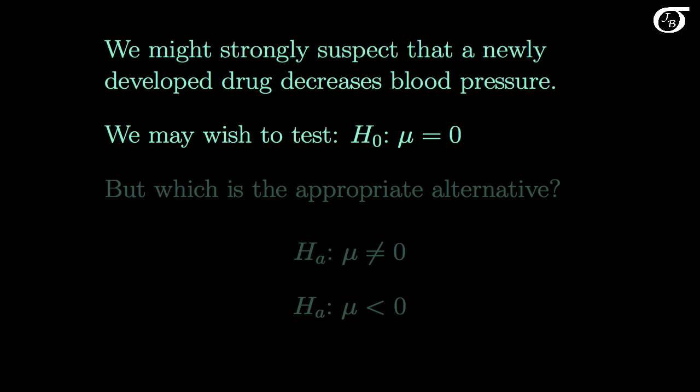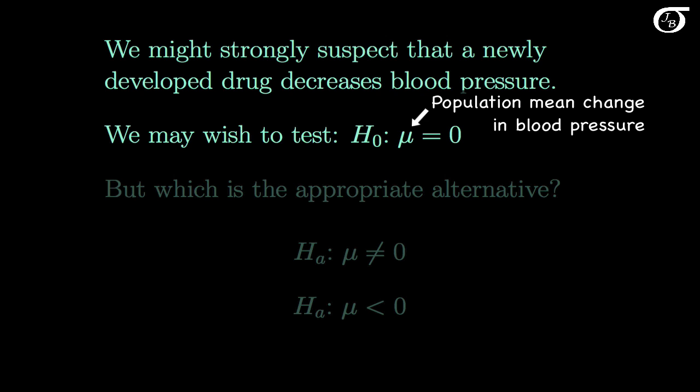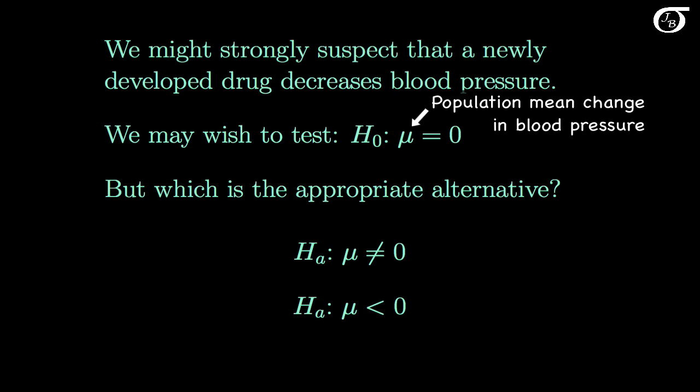We might strongly suspect that a newly developed drug decreases blood pressure, and we may wish to test the null hypothesis that the population mean change in blood pressure is 0 — in other words, this drug does not have an effect on blood pressure. But which is the appropriate alternative?